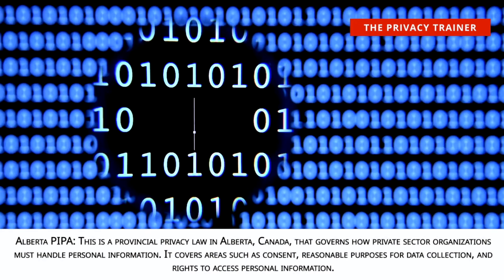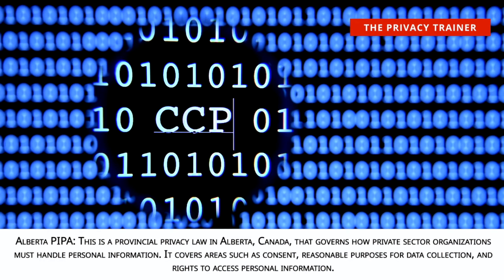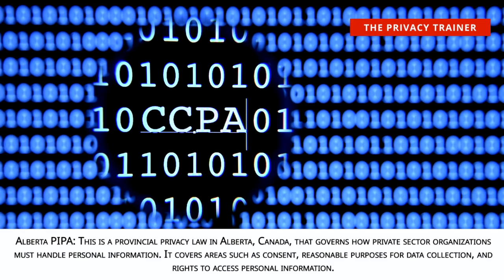Alberta PIPA. This is a provincial privacy law in Alberta, Canada, that governs how private sector organizations must handle personal information. It covers areas such as consent, reasonable purposes for data collection, and rights to access personal information.